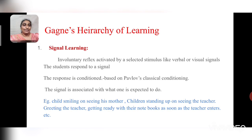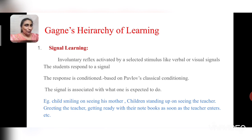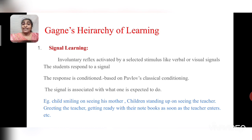The first hierarchical learning according to Gagne is signal learning. Imagine a traffic signal — when we reach a red signal, we stop and wait for it to change; when it becomes green, we start moving. So the signal is associated with what one is expected to do. When a child sees his mother coming, he immediately smiles; if it's a newcomer, his reaction changes.